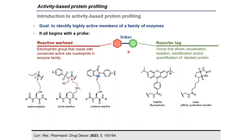The reactive warhead is an electrophilic group that reacts with conserved active site nucleophiles in the enzyme family. Many different reactive warheads have been developed — for example, phosphorus compounds are serine-reactive, amides are lysine-reactive, and selenium compounds are cysteine-reactive — and they are selective for a particular family of enzymes. The linker is several atoms in length; it can be a PEG linker using oxygen ethers or many other structures, with a big impact on productivity.